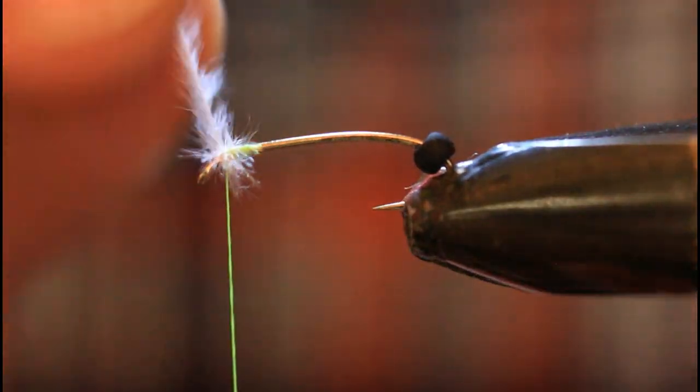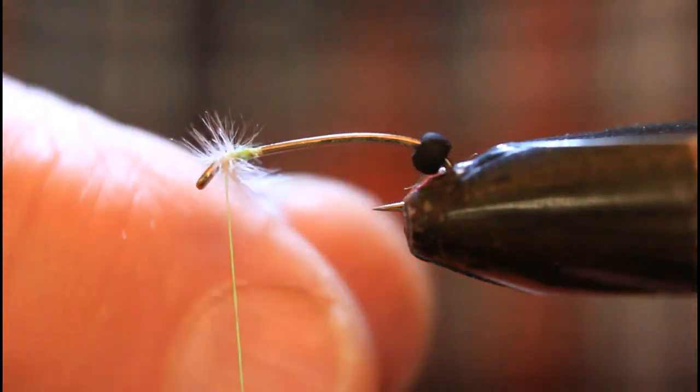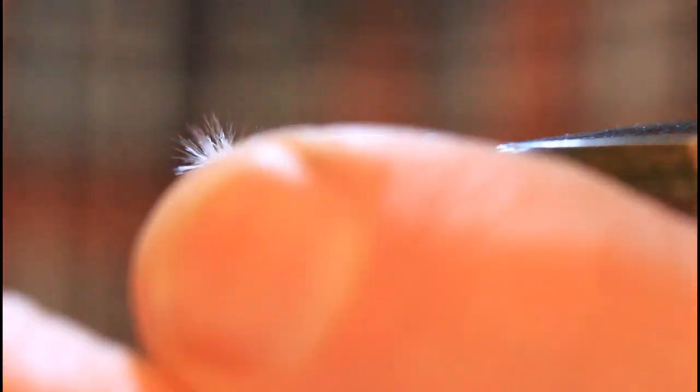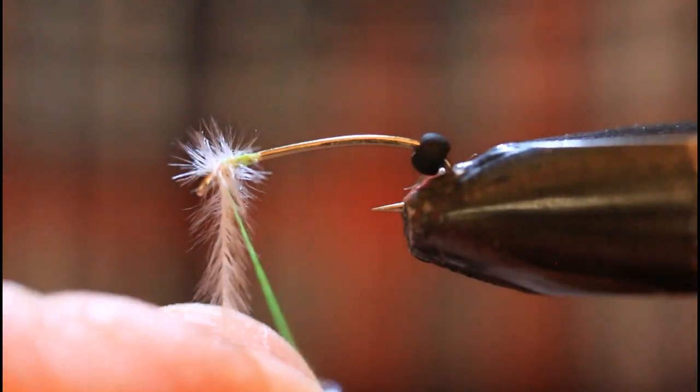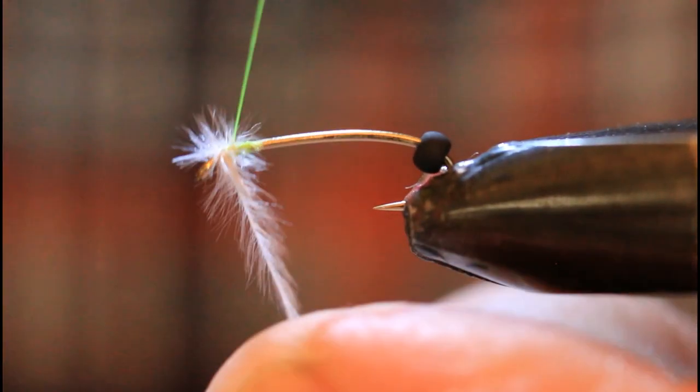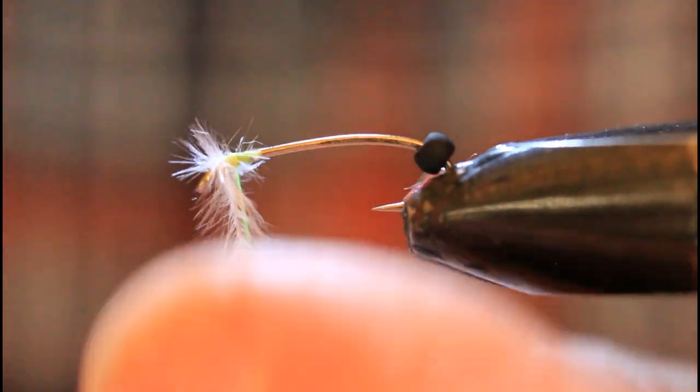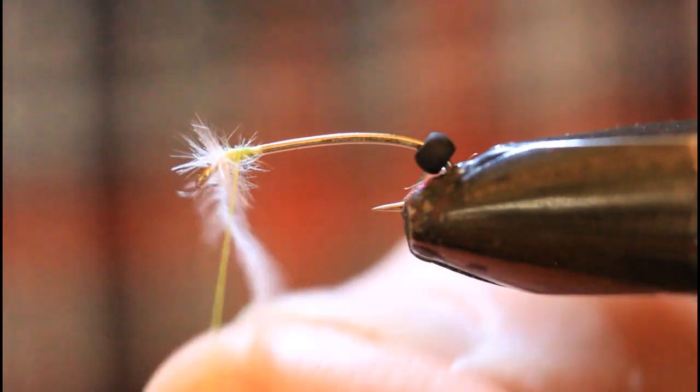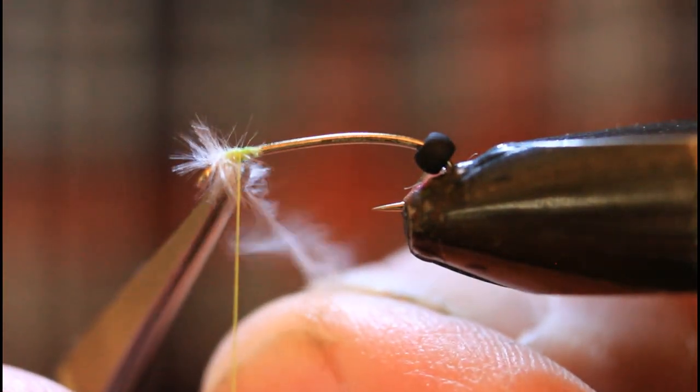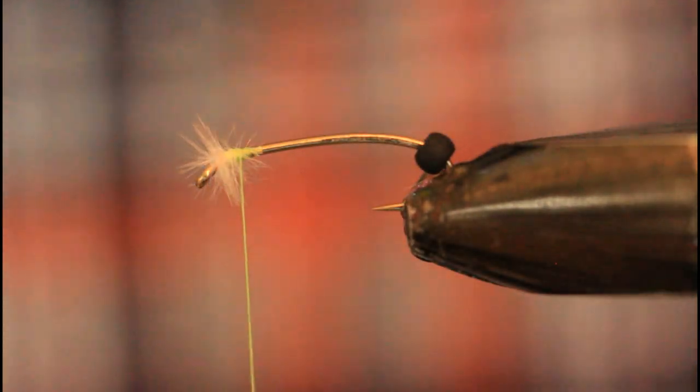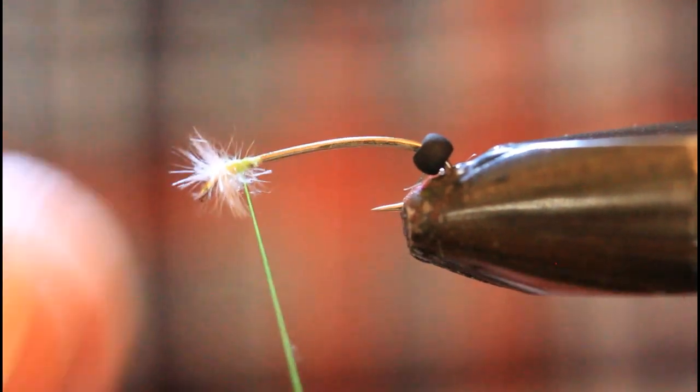Oh, come undone. That happens. You could use hackle pliers for this to simplify the holding onto it. But I find the feather long enough to do it by hand. So we'll just capture that with about three wraps of thread. And then cut off the tag end. And then give our thread a whip finish.